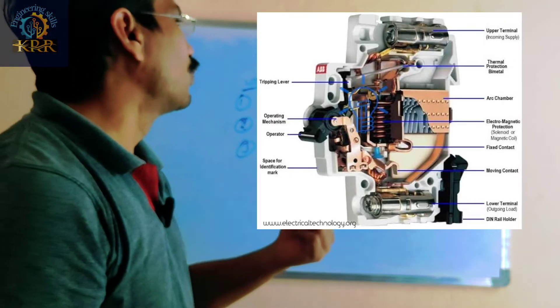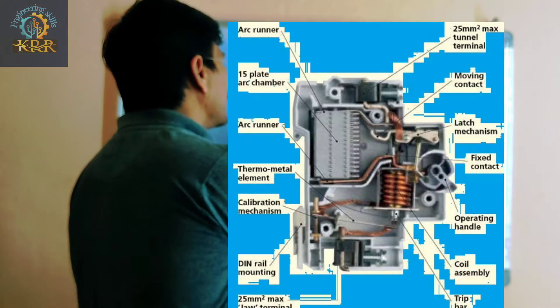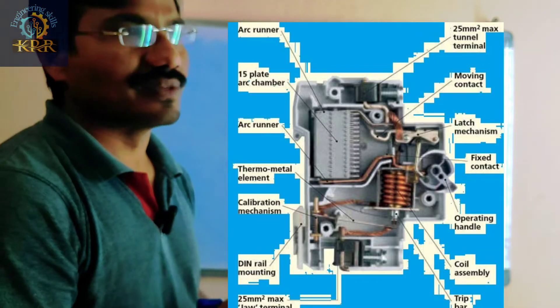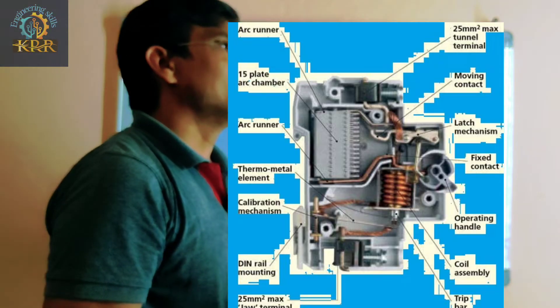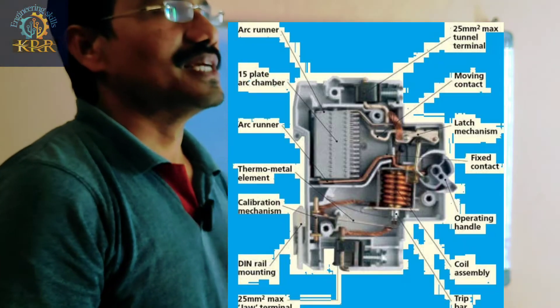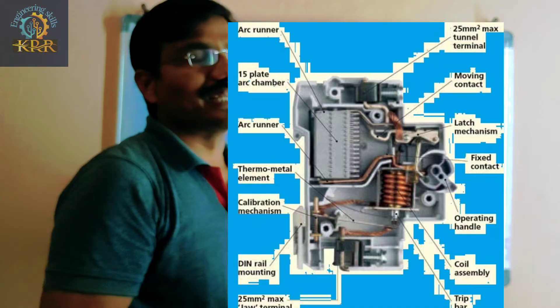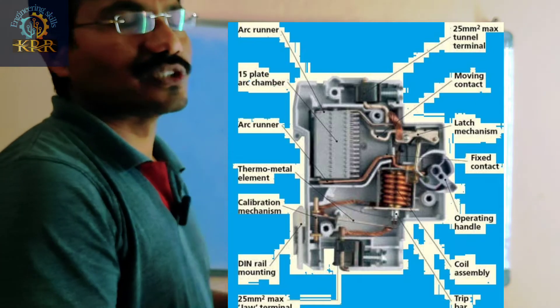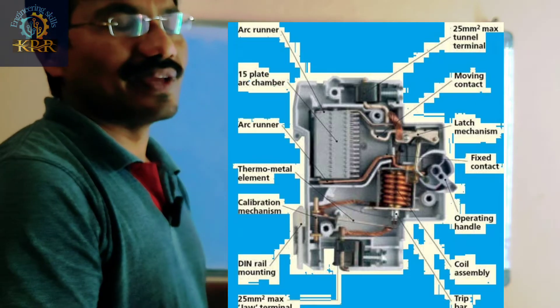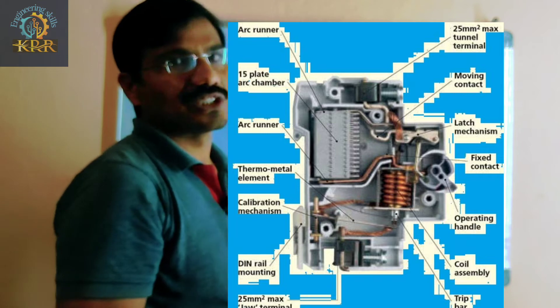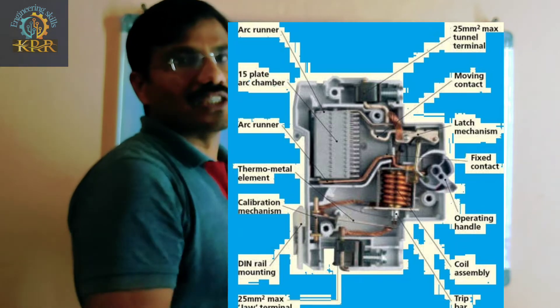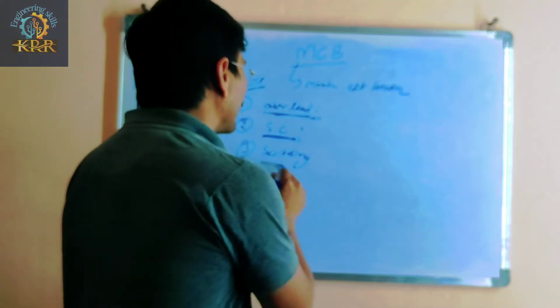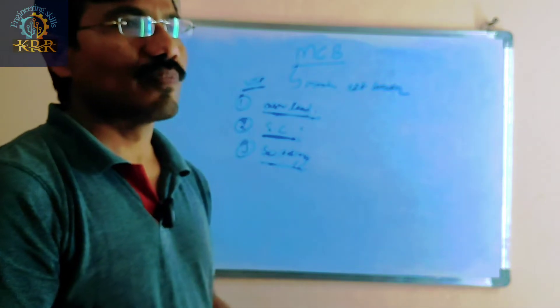For short circuit protection, inside the MCB there is a magnetic coil. When a short circuit occurs, with the help of this magnetic coil and a plunger, the MCB is isolated.